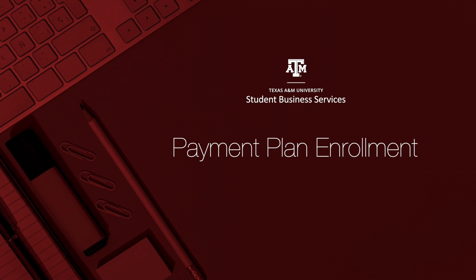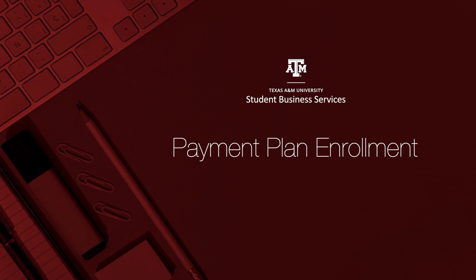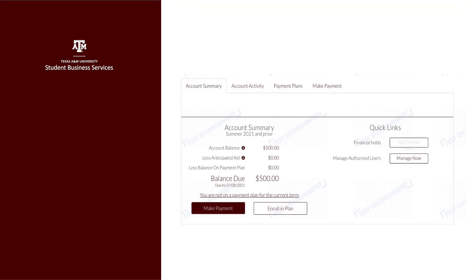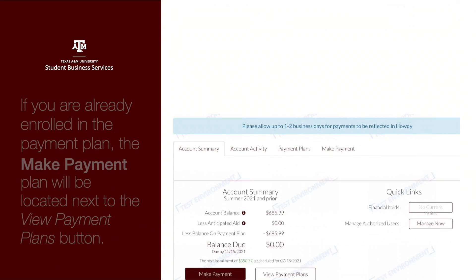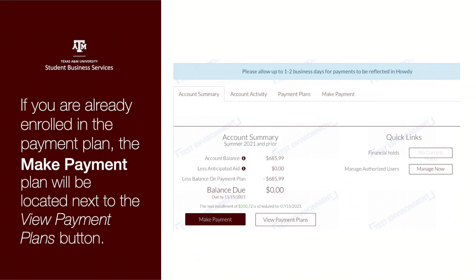To enroll in the payment plan, go to the Account Summary tab and click on the Enroll in Plan option located next to the Make Payment button. If already enrolled in the payment plan, the Make Payment option will be located next to the View Payment Plans button.